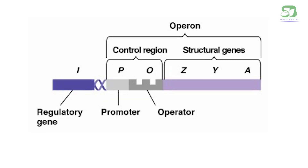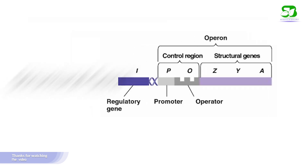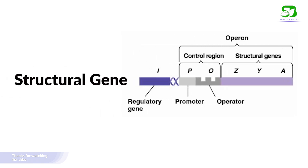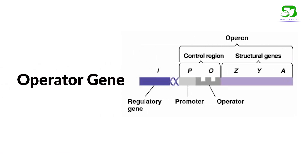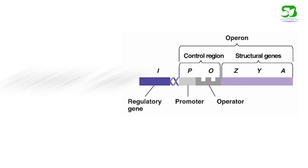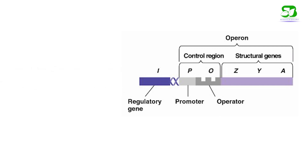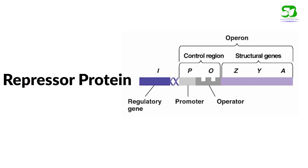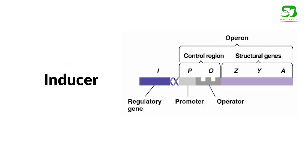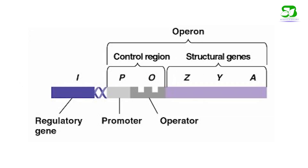An operon is a part of DNA which acts as a single regulated unit having one or more structural genes, an operator gene, a promoter gene, a regulator gene, a repressor, and an inducer.